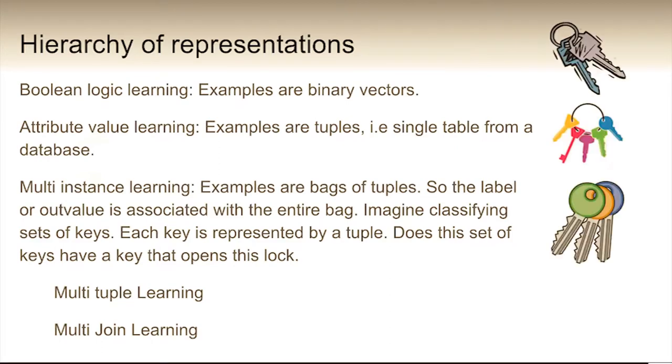So in fact, there's actually a hierarchy of representations. So I'm just going to talk through this hierarchy. At the bottom level, you've got boolean logic learning. This is where your examples are binary vectors. So each attribute can either take the value 0 or 1.